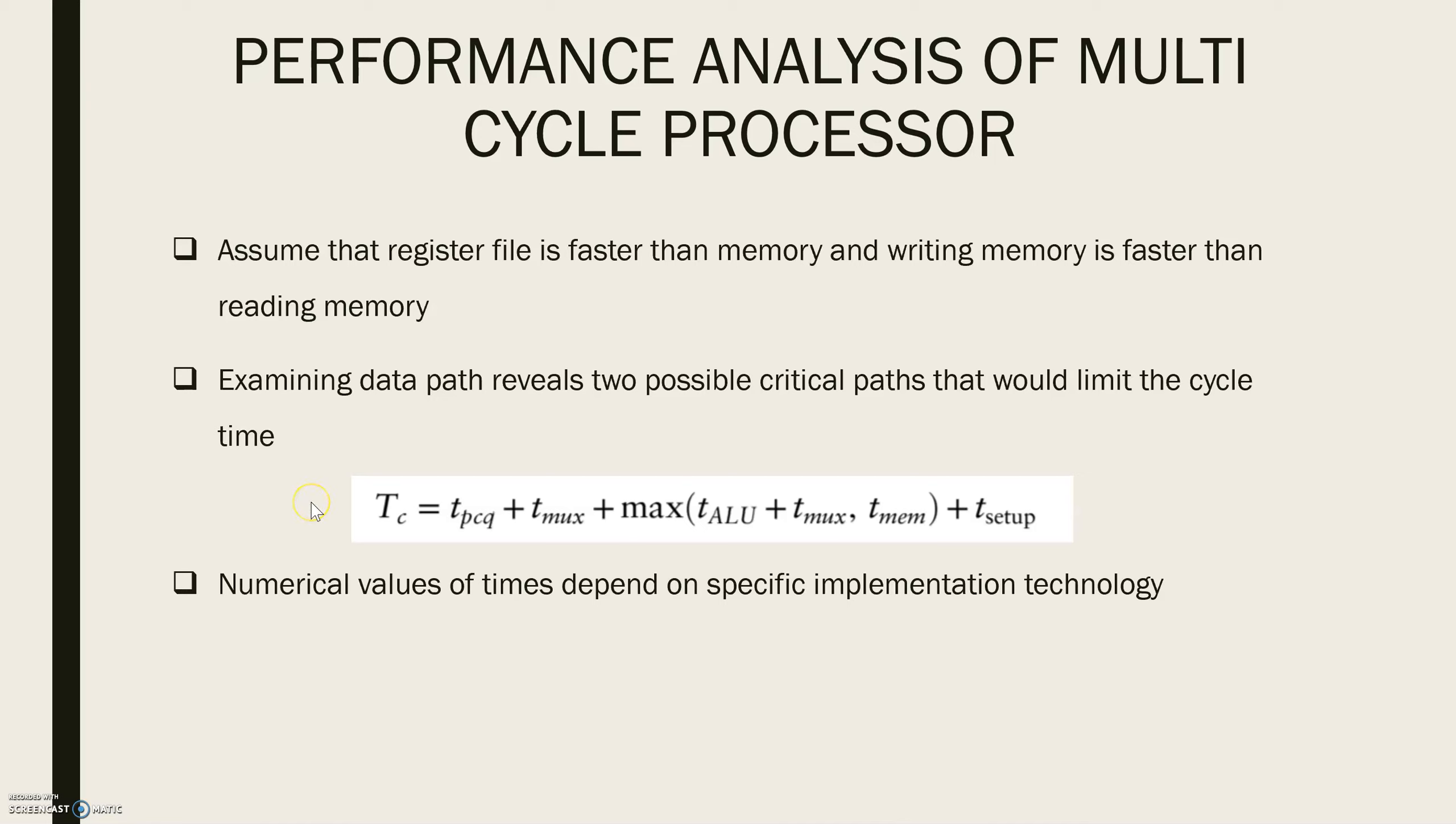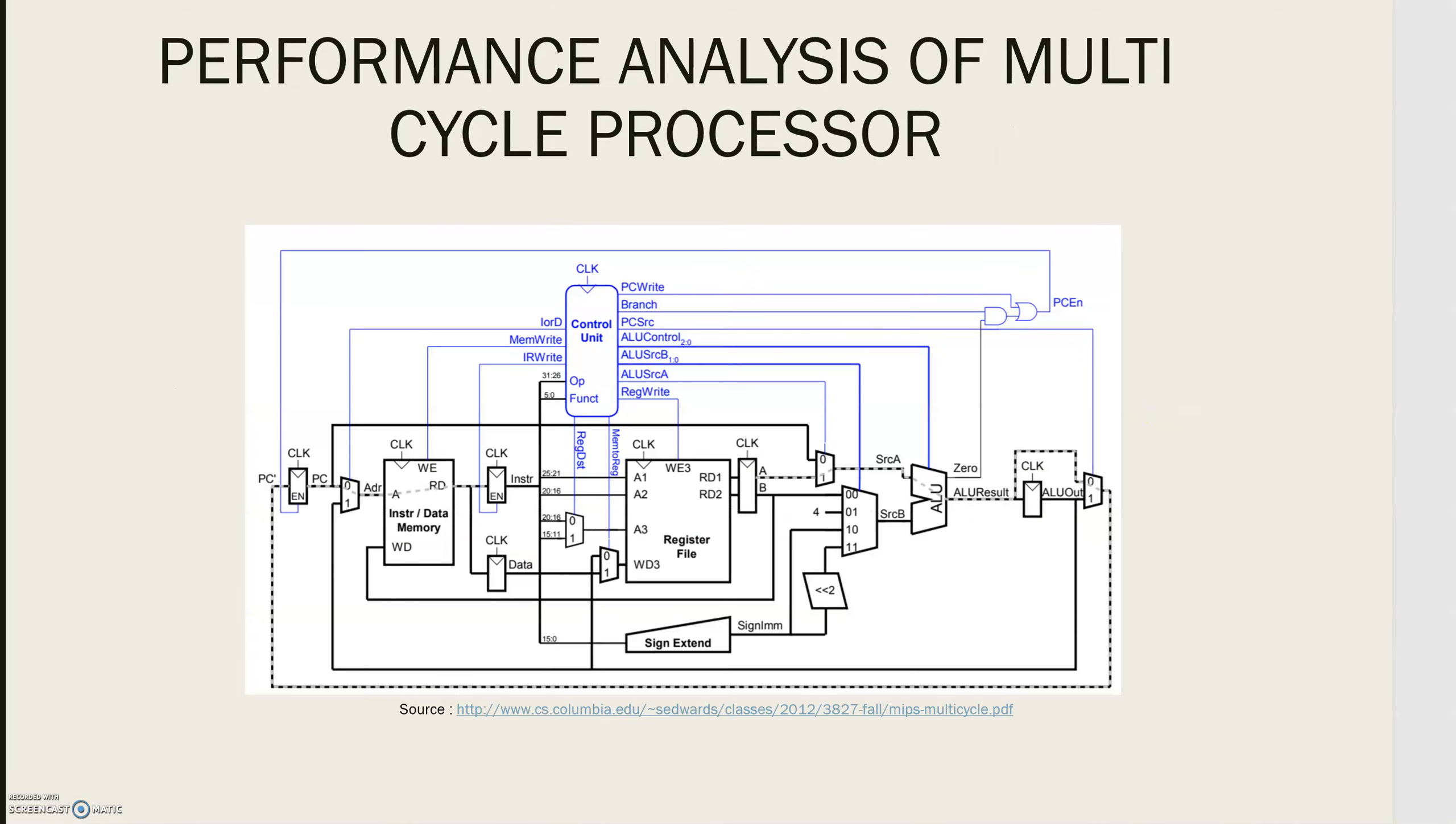Keeping these information in mind, when we examine the data path, it reveals two possible critical paths that would limit the cycle time. This is given by the dotted lines here. One is reading the memory and the other is going through ALU.